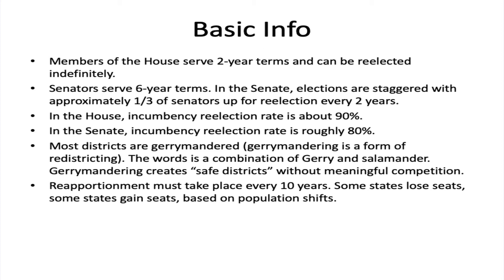In many states, you have very significant control by one party or another. For example, in California, Democrats have for years controlled both the Assembly and the Senate, and the governor has been a Democrat for a long time. So districts are drawn in a way that is very advantageous for Democrats and extremely difficult for Republicans. A similar situation occurs in many other states. When a typical congressional election comes around, approximately 40 to 50 House seats are truly competitive, where you don't know the result beforehand. In all other cases, you can accurately predict the result before votes are even counted, because those are safe, gerrymandered districts.